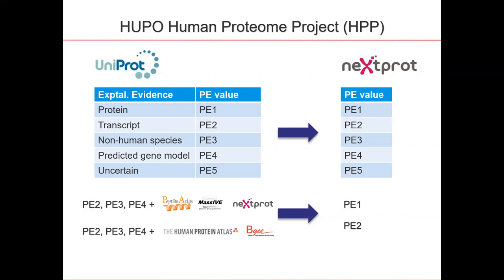Since we have data from a number of additional resources, we can upgrade the protein existence values of entries which are PE2, 3, or 4 to PE1 with mass spectrometry data taken from PeptideAtlas, MassIVE, and NEXTProt, and to PE2 with RNA-seq data from Human Protein Atlas and BGee.